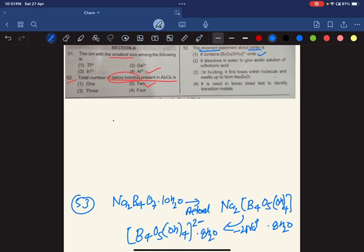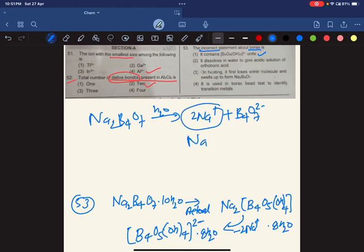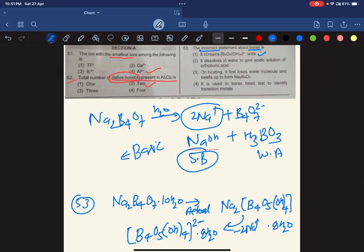It dissolves in water to give acidic solution of orthoboric acid. So, Na2B4O7, we have to put 2 Na plus and B4O7 two minus. After putting it in water, what is Na2 and plus H3BO3. H3BO3, this is weak acid, this is strong base. So, what is the basic solution? What is the pH greater than 7? So, you know, acidic is wrong. So it is incorrect.